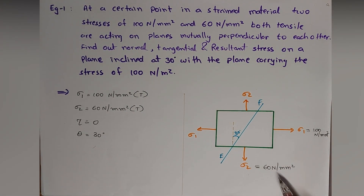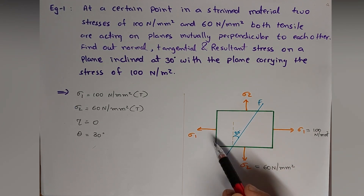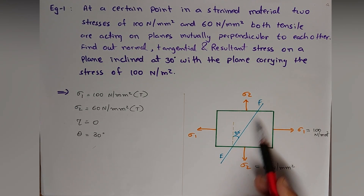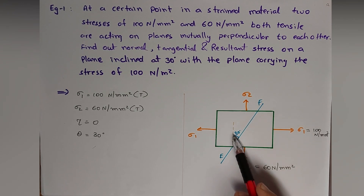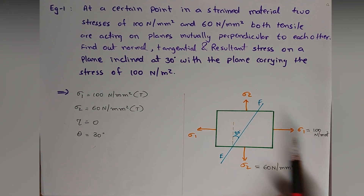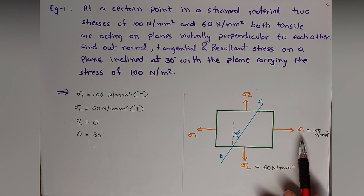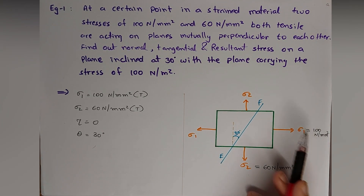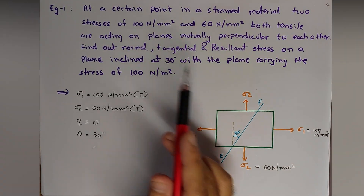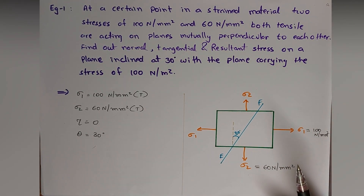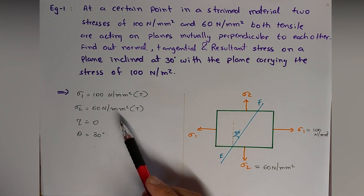First, we need to draw the figure, which is not given in the question. We draw σ₁, σ₂, and the plane EF inclined at 30 degrees with the vertical, i.e., at 30 degrees with σ₁. There is no shear stress, as it is not mentioned in the question.